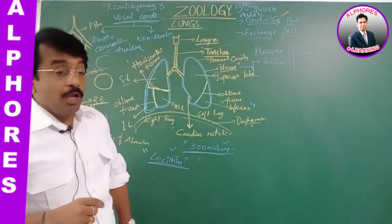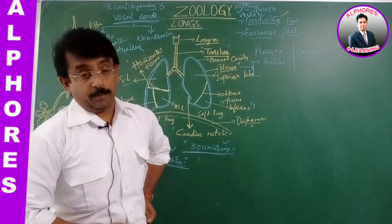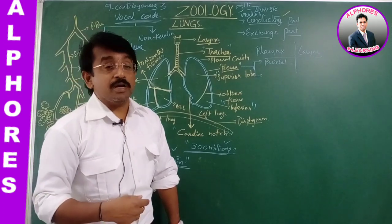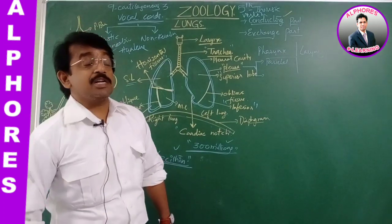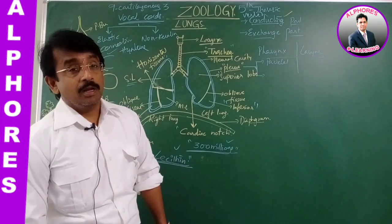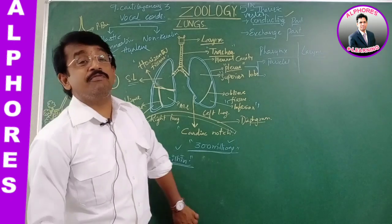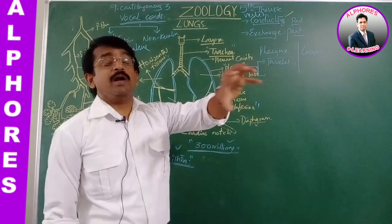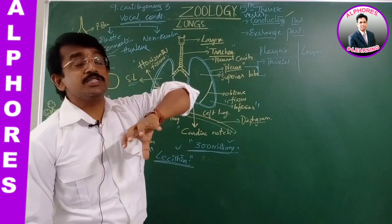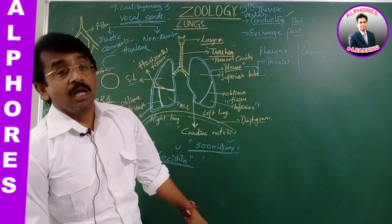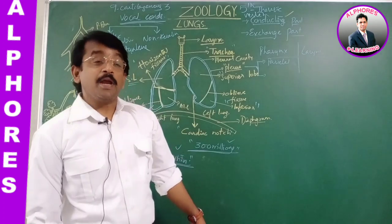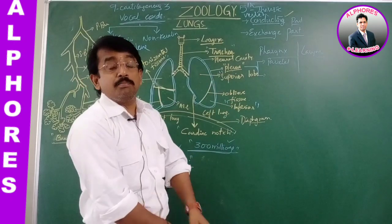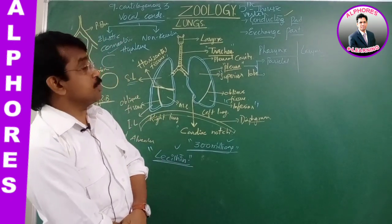We cannot hold our breath for a longer period, which is followed by increasing tension that may damage body parts. But the elephant seal can hold its breath for 2 hours. The reason is myoglobin, a respiratory pigment like that of blood hemoglobin. This myoglobin pigment helps in oxygen storage.